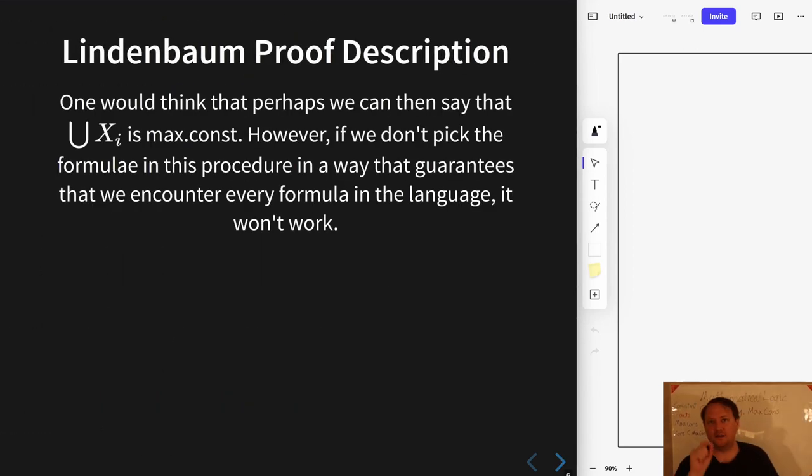Even if you were wisely choosing which formulae get added in, you'd need to make sure that you eventually got to everything. So even if you took the result of this procedure, union everything that you take along the way, that may still not be maximally consistent because there's no guarantee that this particular sequence of formulae that you've chosen necessarily explored every formula in the space of all formulas. So this is a proof that is not guaranteed to work.